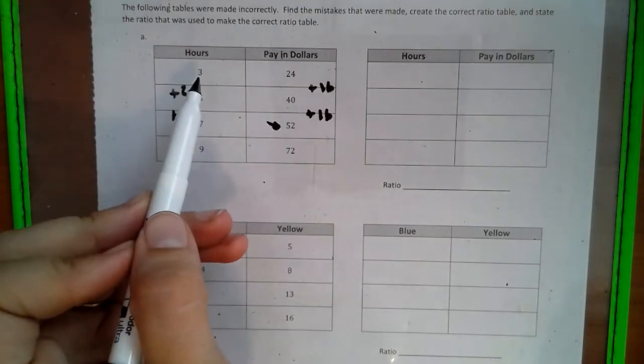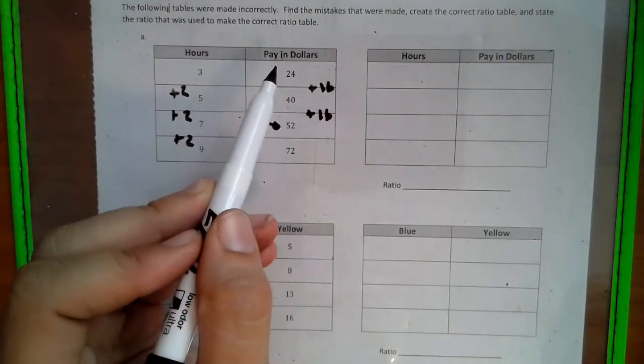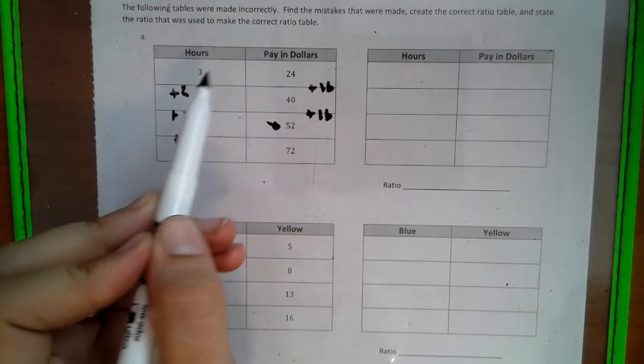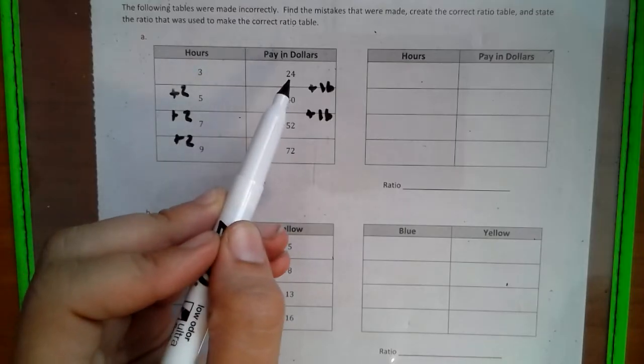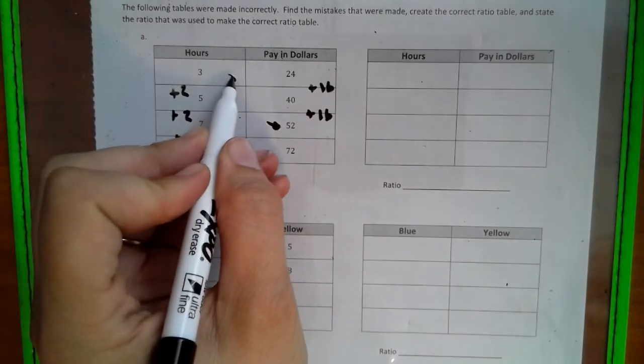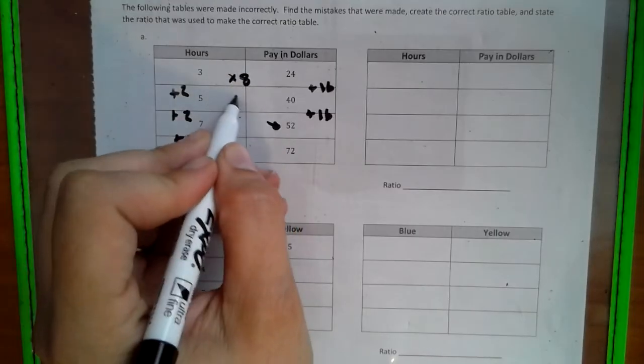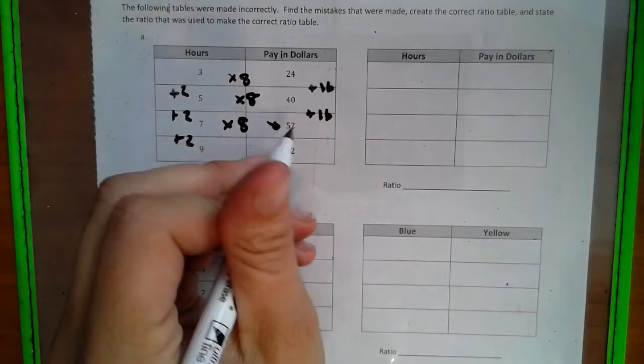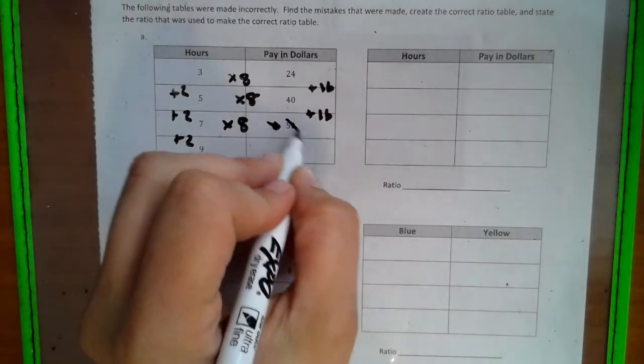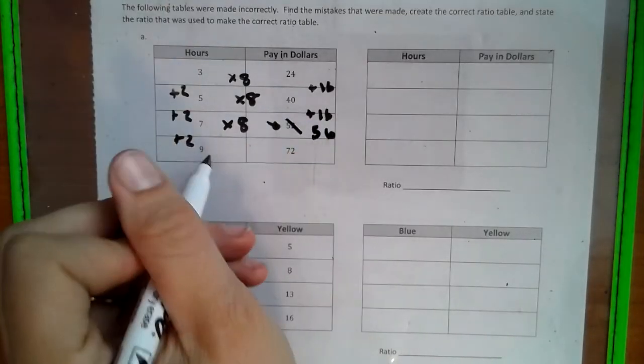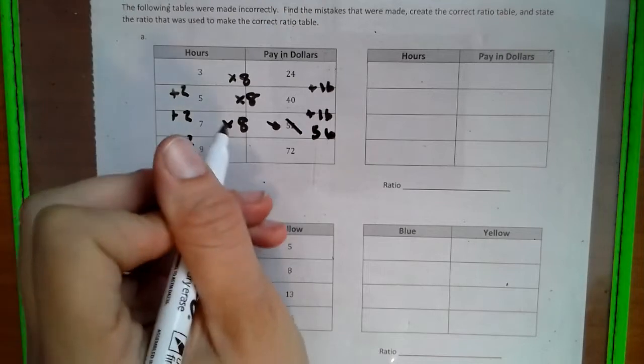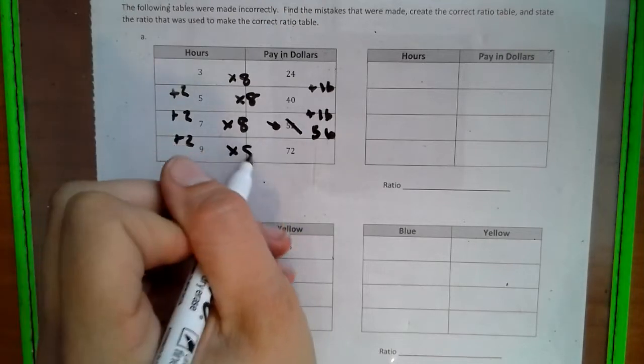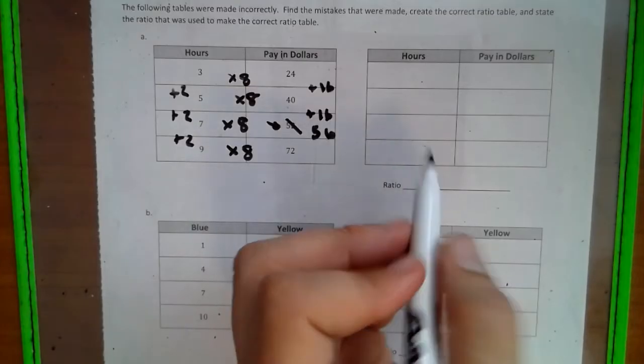So now we're going to look at the horizontal patterns. 3 gets to 24 by 8. So this is a multiplying 8 pattern. 5 goes by 8 to get to 40. 7 goes by 8, does not get to 52, but gets to 56. Now let's check here. Is 9 by 8, 72? Yes. So our pattern is an 8 pattern.